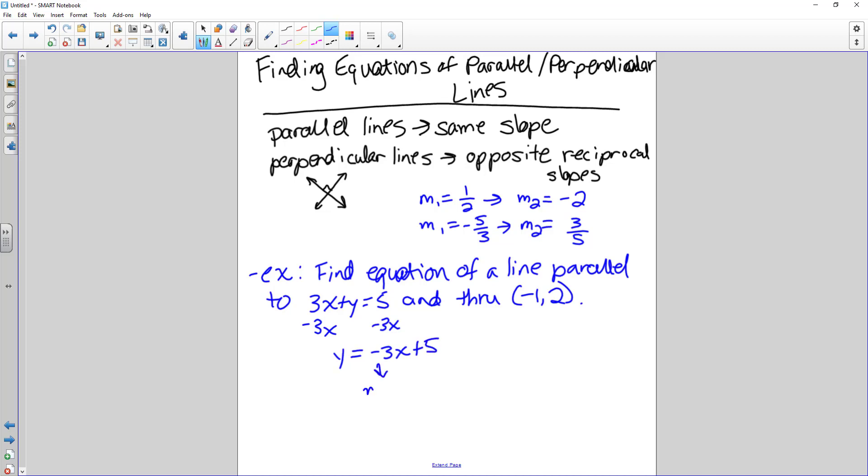So this slope, the slope of this line is negative three. So since we're doing a parallel line, that slope is also negative three. So we'll use that. The slope of the first line is negative three. Parallel line is going to have the same slope.